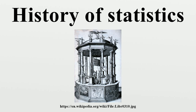By 1800, astronomy used probability models and statistical theories, particularly the method of least squares. Early probability theory and statistics was systematized in the 19th century, and statistical reasoning and probability models were used by social scientists to advance the new sciences of experimental psychology and sociology, and by physical scientists in thermodynamics and statistical mechanics. The development of statistical reasoning was closely associated with the development of inductive logic and the scientific method, which are concerns that move statisticians away from the narrow area of mathematical statistics. Much of the theoretical work was readily available by the time computers were available to exploit them.